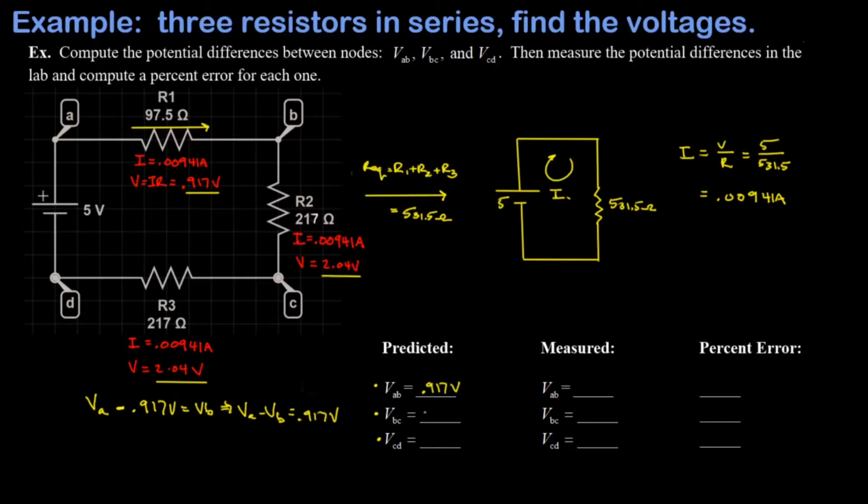Vbc is 2.04 volts and Vcd is also 2.04 volts. All right, so let's head to the lab where I'm going to start by showing how I measured these resistances really quick, illustrating how to wire the circuit on the breadboard, and then we'll get experimental values of all these voltages.